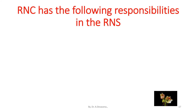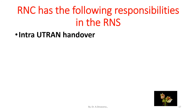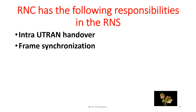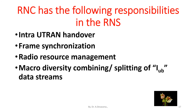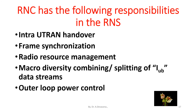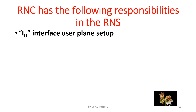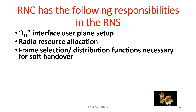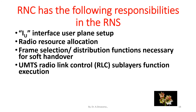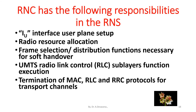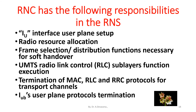A RNC is responsible for the use and allocation of all the radio resources of the RNS to which it belongs. It can also handle user voice and packet data traffic and perform necessary actions to access the radio bearers on the user data streams. RNC responsibilities include: intra-UTRAN handover, frame synchronization, radio resource management, macro diversity, combining or splitting of Iub data streams, outer loop power control, Iu interface user plane setup, radio resource allocation, frame selection and distribution functions necessary for soft handover, and termination of MAC, RLC, and protocol layers for transport channels.